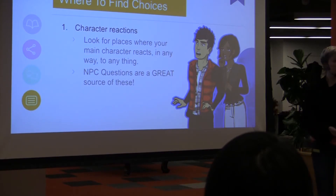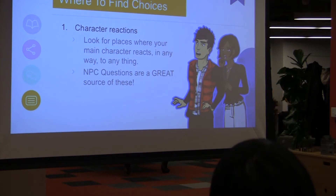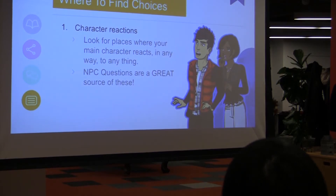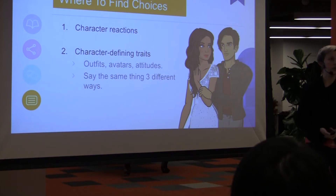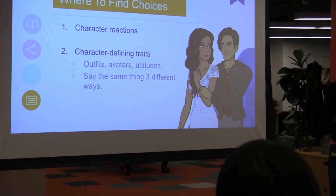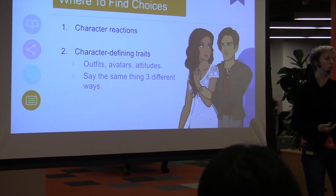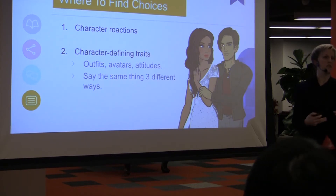There are three places you can find choices pretty quickly. One is character reactions. A quick cheat I use is to search for question marks through my script — pretty much every time there is a question mark, there is a choice. Any time an NPC is asking your character a question, it's a choice. Usually your character has something they sort of have to say, but you can change how they word it or how they choose to react, and allow the player to have a little more agency. Two are character-defining traits — things like avatar creators. Clothing and closets are great, especially if you give them a goal for why they need to wear this outfit. And there are small ones too: if they need to say thank you, they can say 'Oh, thank you so much for your help,' or they can say 'Whatever, thanks.' Same story, but you're getting a slightly different sense of ownership of that character.